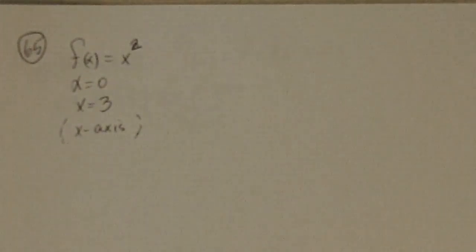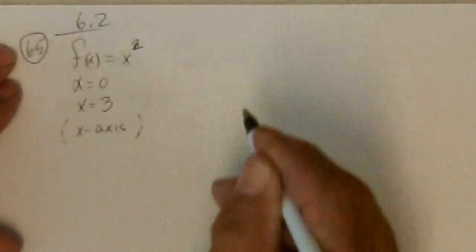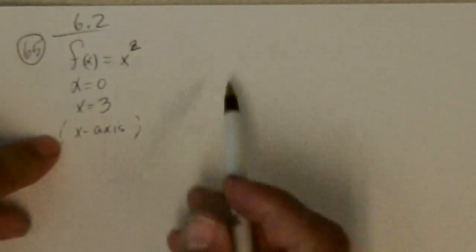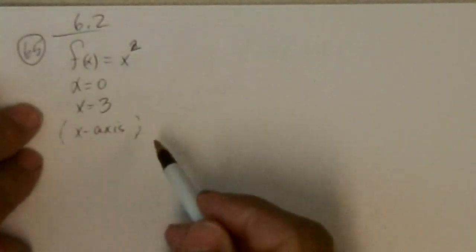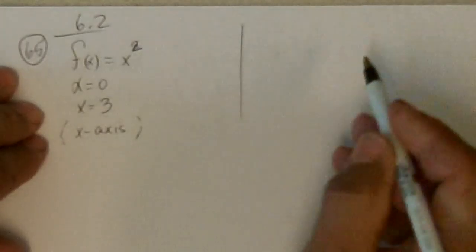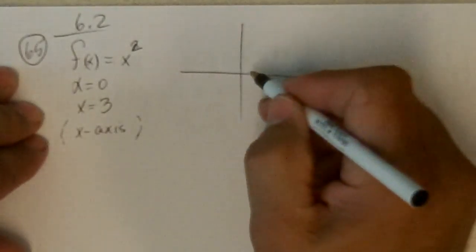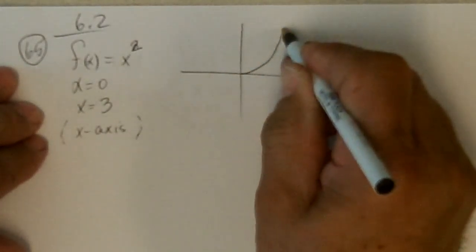All right, 65 on 6.2, that's fine. This is section 6.2, number 65. Says find the area under this curve between 0 and 3, so y equals x squared, or f of x equals x squared is, of course, a parabola.